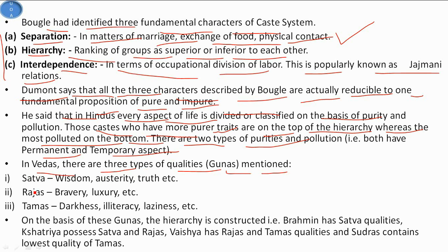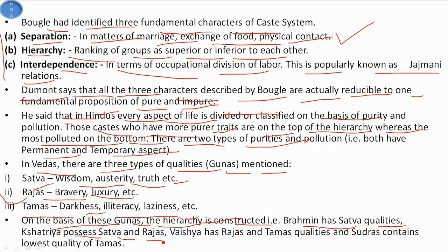In the Vedas there are three types of qualities known as Gunas. The first is Sattva — wisdom, austerity, truth. Rajas means bravery, luxury, etc. And Tamas means darkness, illiteracy, and laziness. On the basis of these Gunas the hierarchy is constructed. Brahmins have Sattva qualities; Kshatriyas possess both Sattva and Rajas; Vaishyas have only Rajas and Tamas qualities; and Sudras contain the lowest quality of Tamas. Permanent purity corresponds to Brahmins, temporary purity to Kshatriyas, temporary pollution to Vaishyas, and permanent pollution to Sudras.